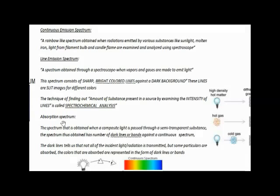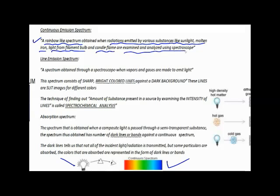The spectra obtained from the spectroscope are used to study and analyze information about light sources. A continuous emission spectrum is a rainbow-like spectrum obtained when radiations emitted from sources like sunlight, molten iron, a filament bulb, or a candle flame are examined using a spectroscope. Light from the bulb passes through the prism in the spectroscope, forming a continuous spectrum.